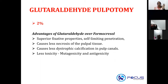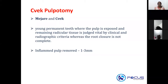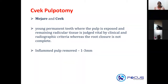The percentage of glutaraldehyde used for pulpotomy is 2%. Next is Sweg pulpotomy, given by Mejare and Sweg. Sweg pulpotomy is actually a partial pulpotomy done in a young permanent tooth following recent trauma. For example, in a young permanent tooth where the pulp is exposed and the remaining radicular pulp is judged vital by clinical or radiographic features, and root closure is not complete, you go for a partial pulpotomy.